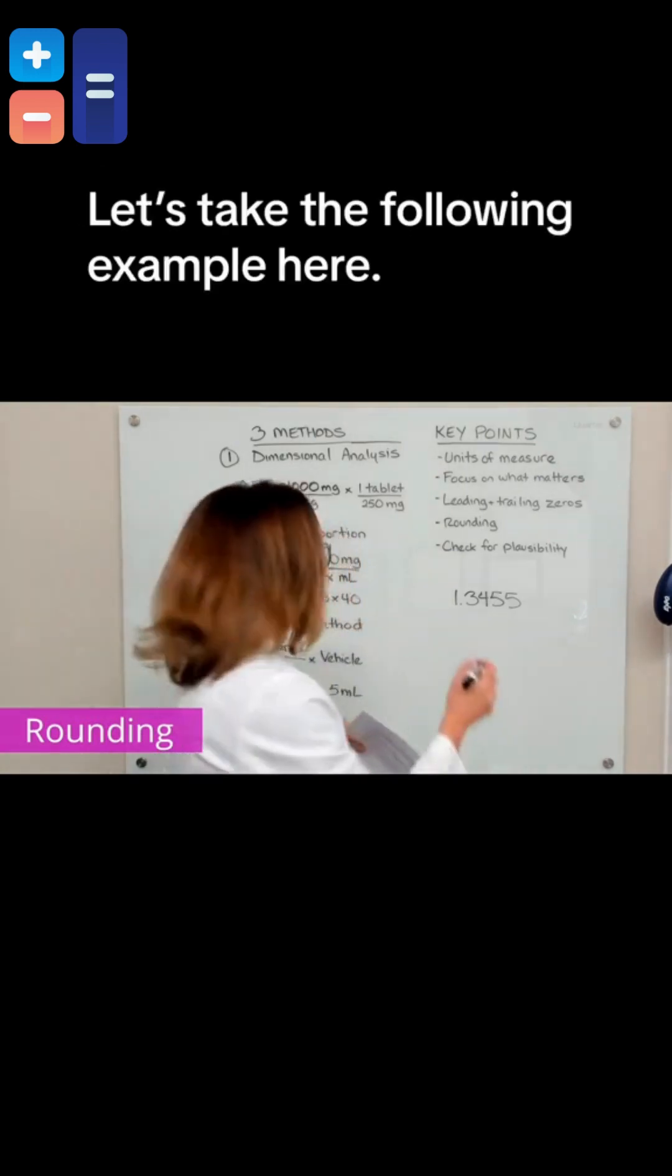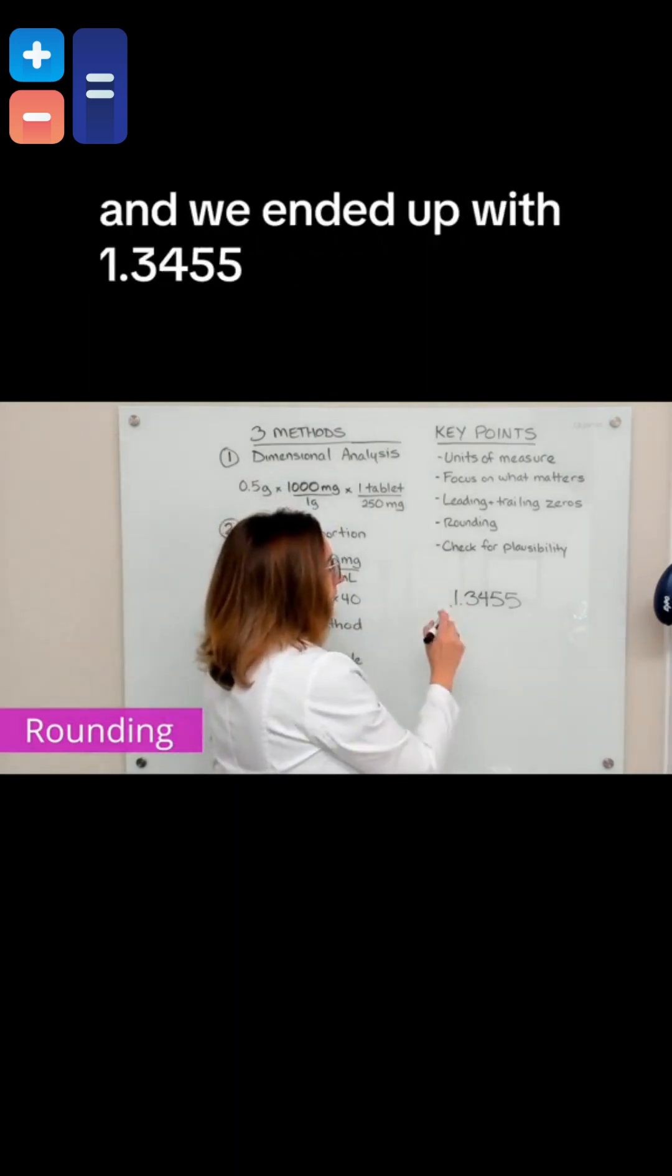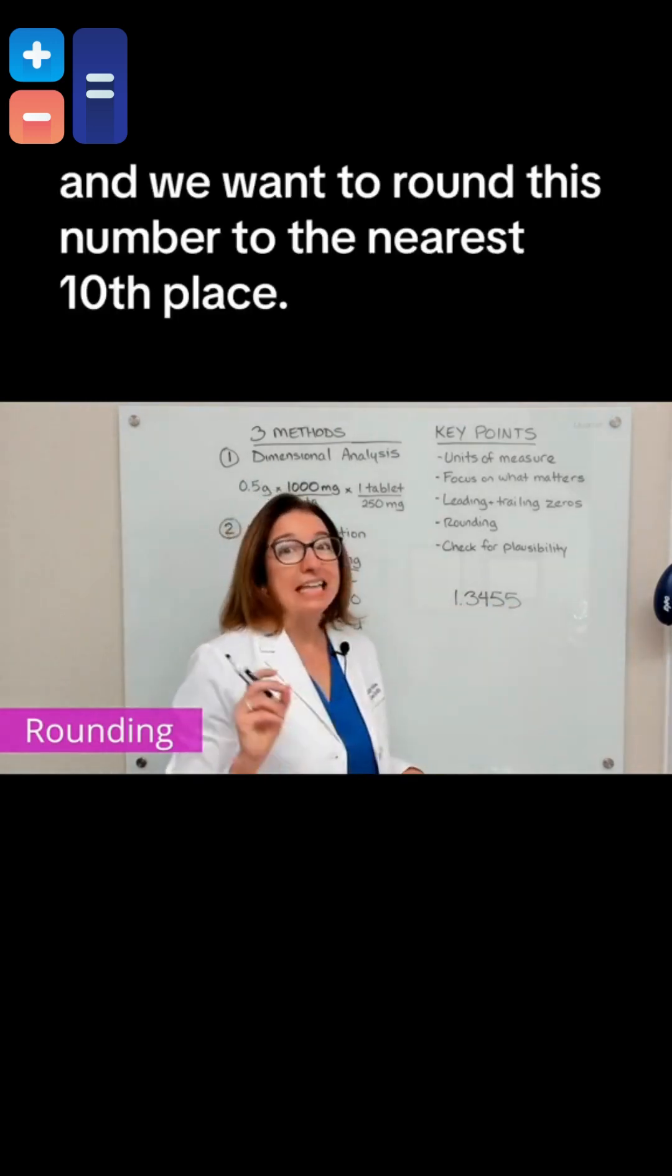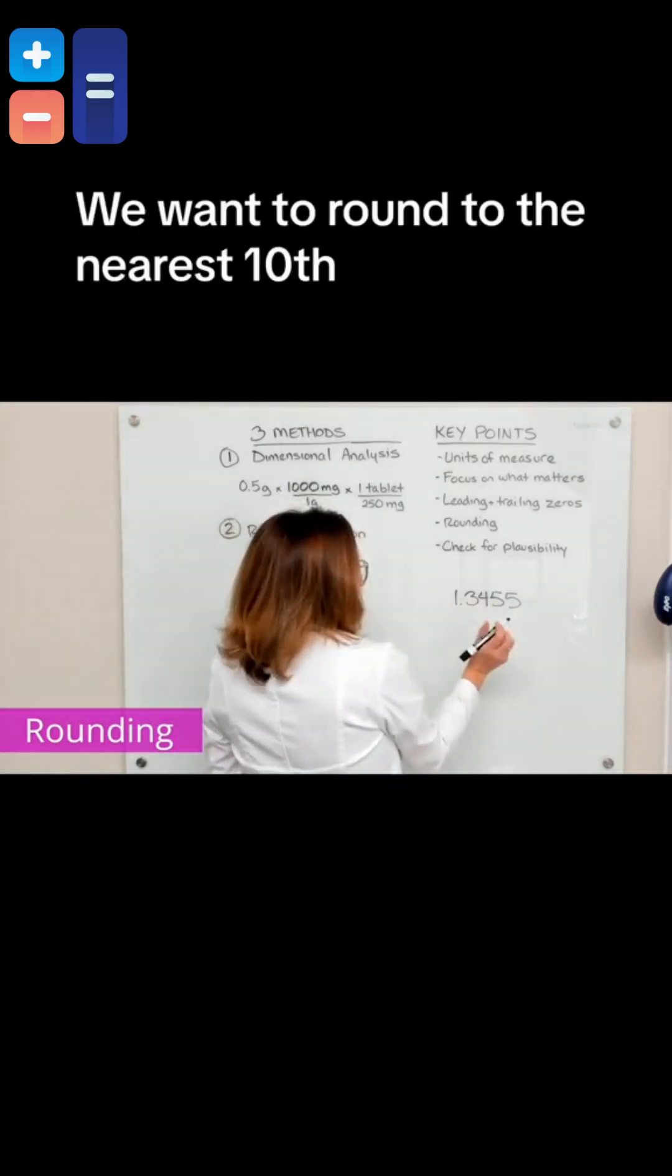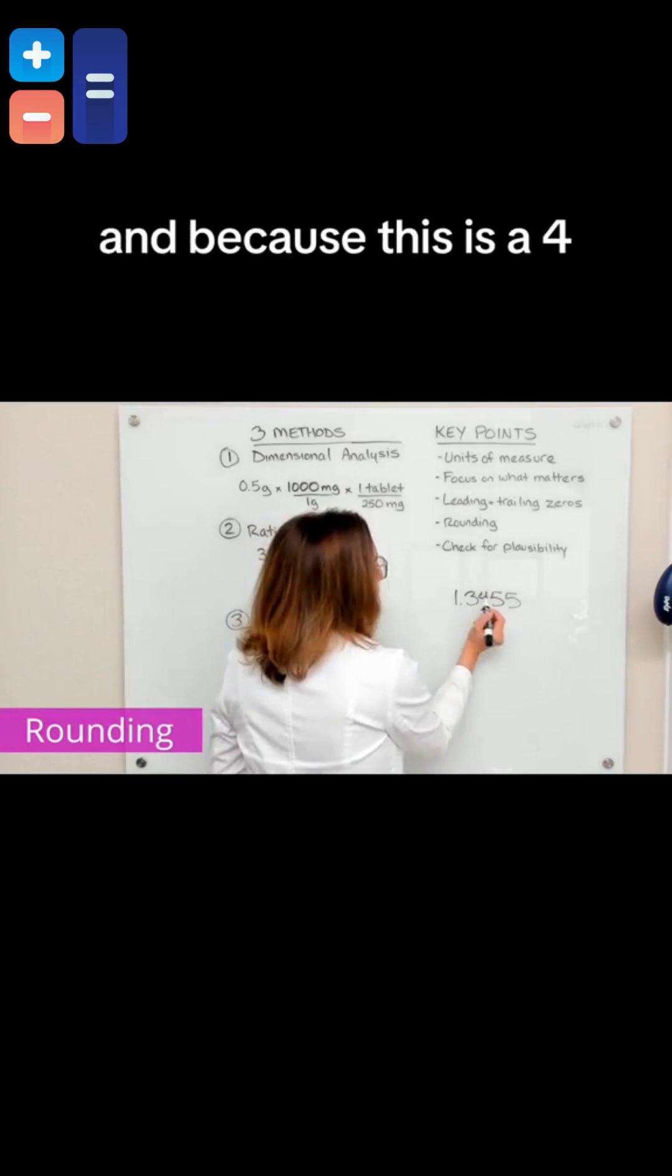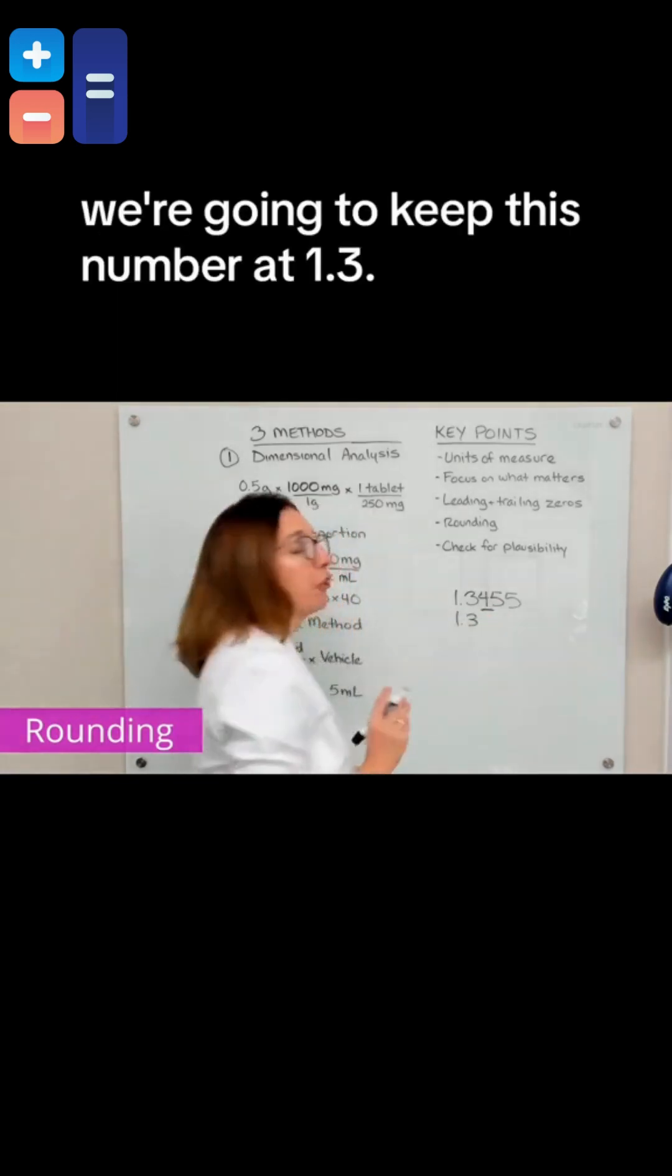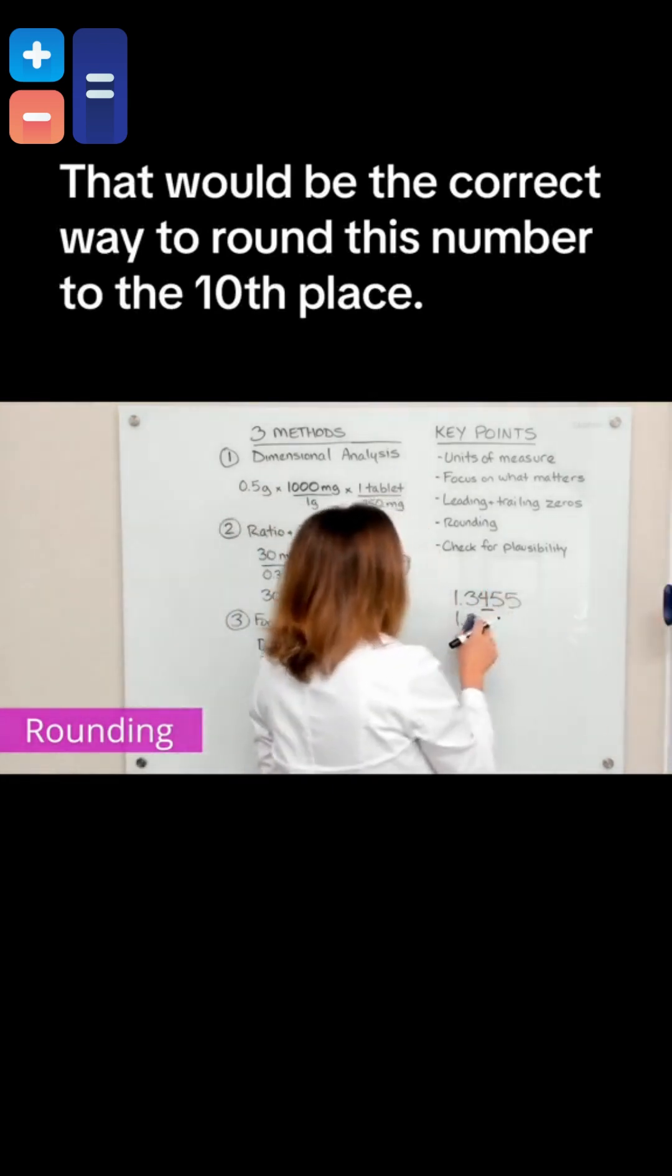Let's take the following example here. Let's say we solved a problem and we ended up with 1.3455. And we want to round this number to the nearest tenth place. We want to round to the nearest tenths. So we only need to consider the digit next to the tenths place. And because this is a four, we're going to keep this number at 1.3. So that would be the correct way to round this number to the tenths place.